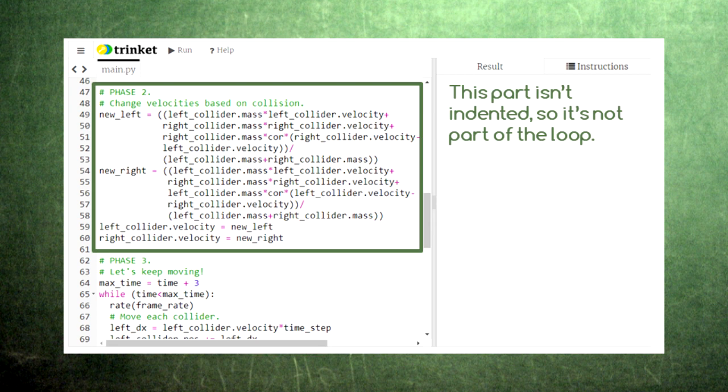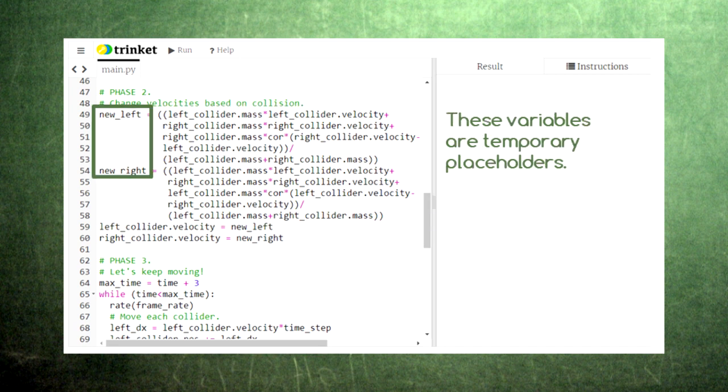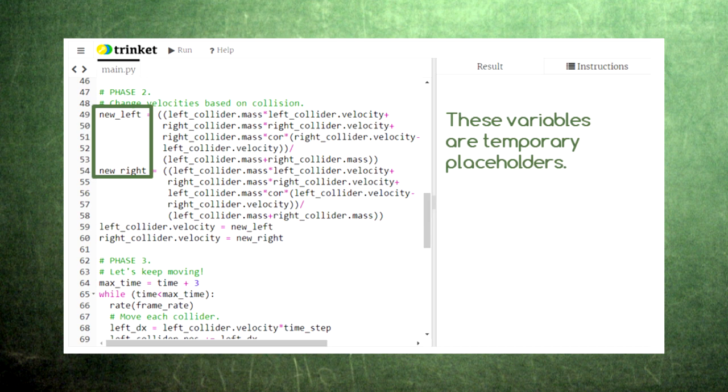Here, we calculate the new velocities of the left collider and right collider based on the coefficient of restitution. Notice that we need to store these new values under new names first, since we need to reference the previous values in both calculations. Then, we can save these new values under the previous names.